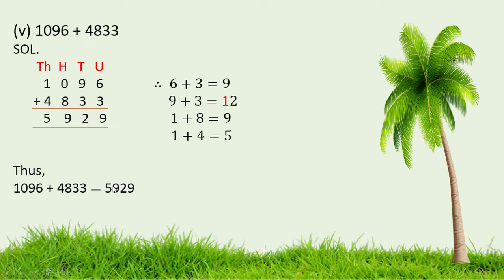The fifth part of Question No. 1: 1096 plus 4833. Add 6 and 3, we get 9. Add 9 and 3, we get 12. Write 2 here and 1 is the carry. Add 1 and 8, we get 9. Adding 1 and 4, we get 5. Write down 5 here. Thus, 1096 plus 4833 is 5929.